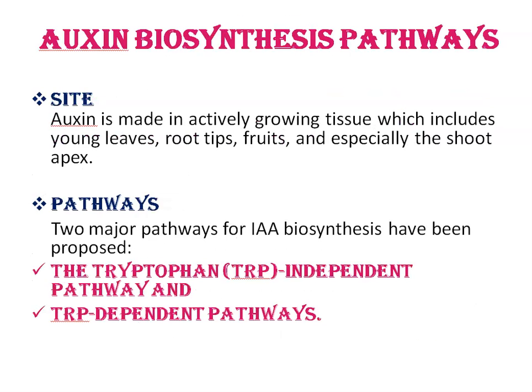Regarding auxin biosynthesis sites and pathways: auxin is made in actively growing tissues, which include young leaves, root tips, fruits, and especially the shoot apex. Two major pathways for IAA biosynthesis have been proposed — the tryptophan-independent pathway and tryptophan-dependent pathways.